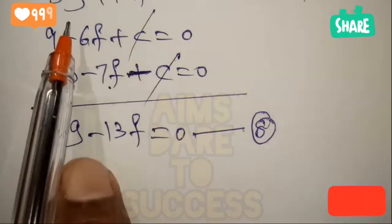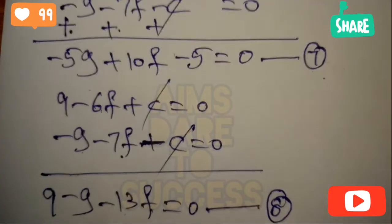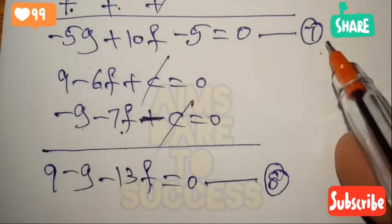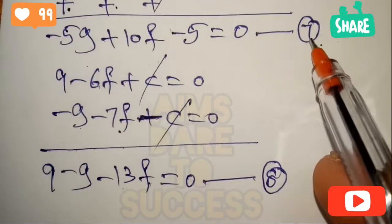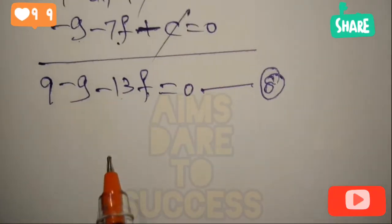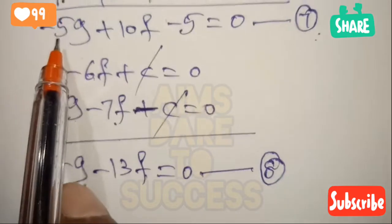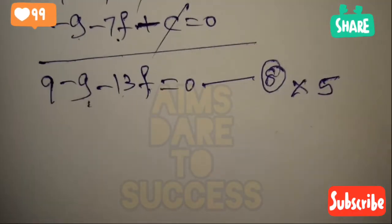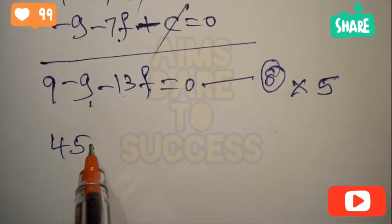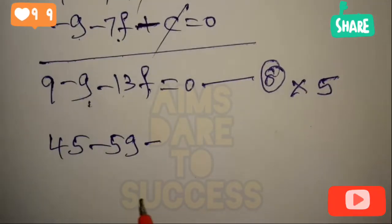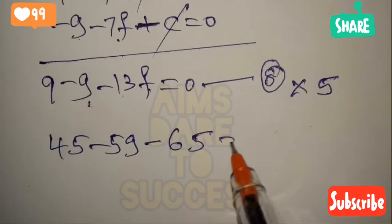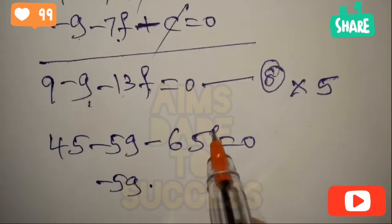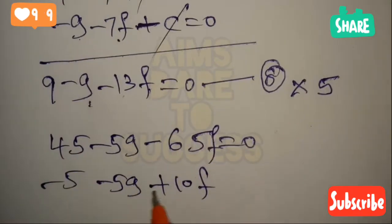To eliminate g, we multiply equation 8 by 5, giving 45 - 5g - 65f = 0. Equation 7 is -5g + 10f - 5 = 0. Now the g-coefficients are equal with the same sign.